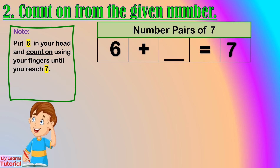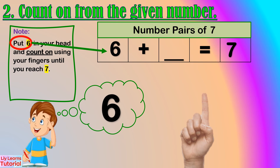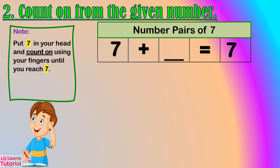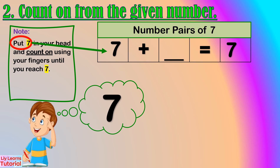Let's start from 6. Hold 6 in your head, then count up: 7. How many fingers have you lifted? 1 finger. So, the number pair of 6 is 1. Now let's start from 7. We already reached the maximum number, so no need to count on. That means the number pair of 7 is 0.